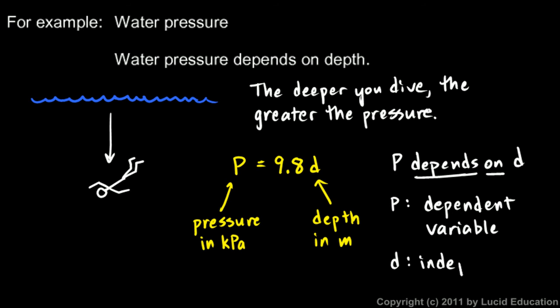And then d is what we would call the independent variable. You can always tell by thinking which one of these variables depends on the value of the other.